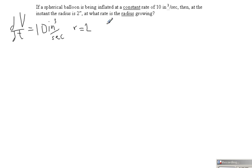And we are trying to find the rate that the radius is changing in terms of time. So we'll start by writing the volume equation of a sphere. Volume equals 4 thirds pi r cubed.